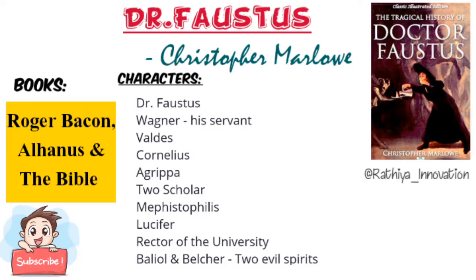The servant Wagner tells them that God in heaven knows where his master is. When the two scholars ask Wagner about Faustus, he replies saying how can a servant know about his master. Through these lines we can see the humorous sense of Wagner, who cuts jokes with them. This scene is in a comic vein, intended to provide dramatic relief to the audience after the tension of the first scene, which was very serious. On hearing the words of Wagner, the two scholars are confused and perplexed, and keep questioning him.